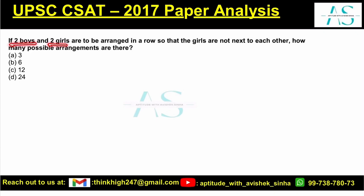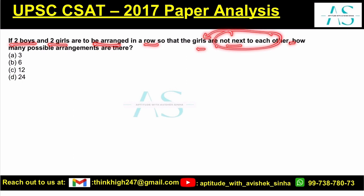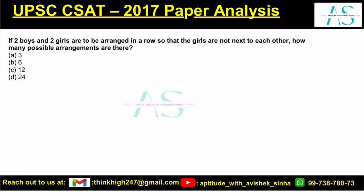Two boys and two girls are to be arranged in a row such that the girls are not next to each other. How many possible arrangements are there?